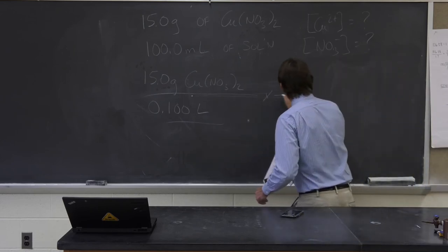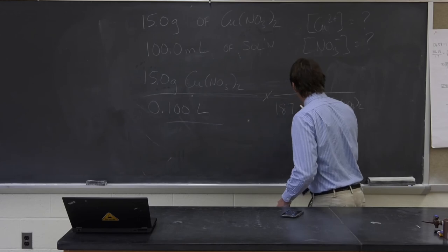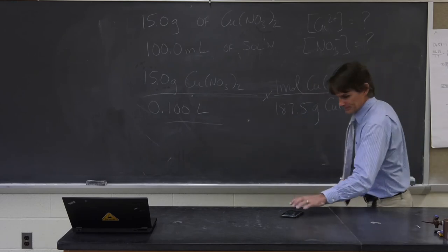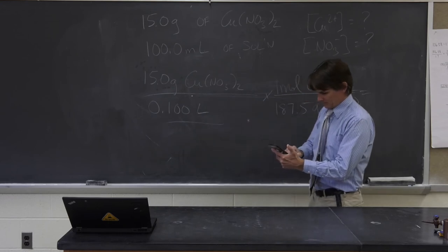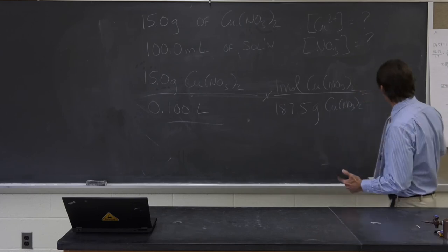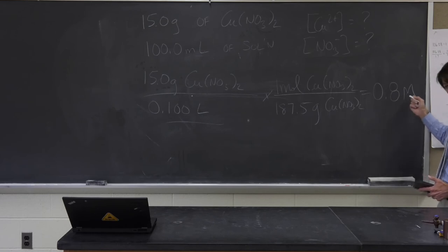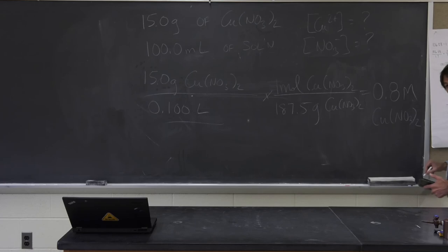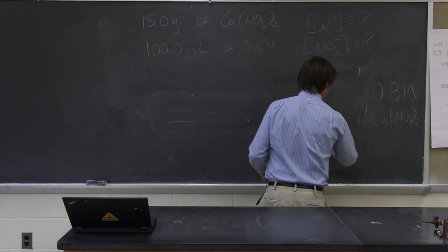Converting grams of copper(II) nitrate using 187.5 grams per mole into moles of copper(II) nitrate: 15 divided by 0.1 times 1 divided by 187.5 equals 0.8. So the concentration is 0.8 molar — that's 0.8 moles of copper(II) nitrate per liter. Now that I know the concentration of copper(II) nitrate, I can answer the two questions about the individual ion concentrations.